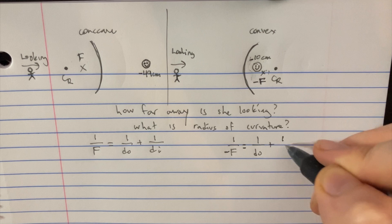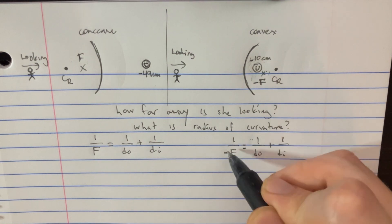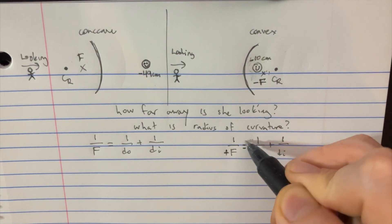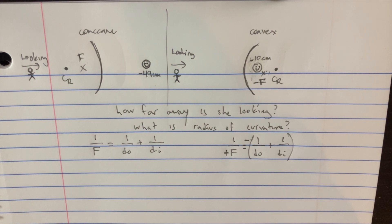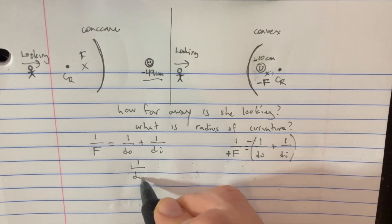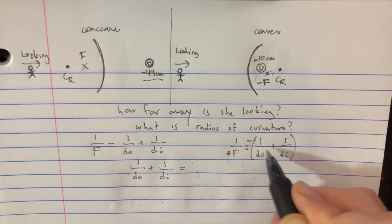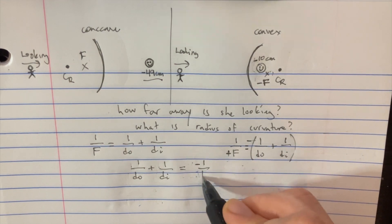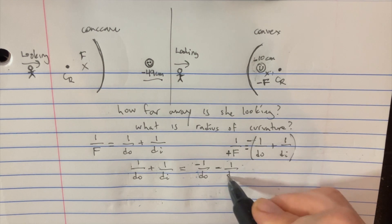1 over D naught plus 1 over D of the image. If we wanted to solve this, then we have to set these equal to each other. But let's make this positive and then multiply this by negative so that will take care of itself. At this point, we could set the equations equal to each other. So we'll go 1 over D object plus 1 over D of the image on that side is going to be equal to negative 1 over D of the object minus 1 over D of the image there.